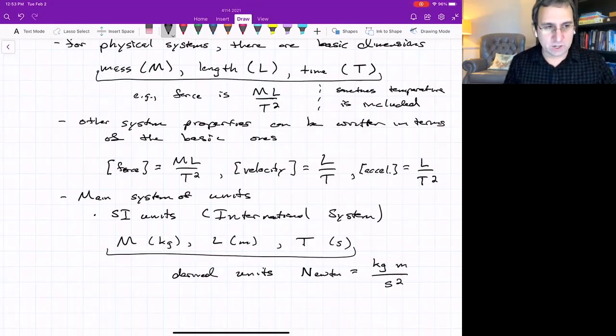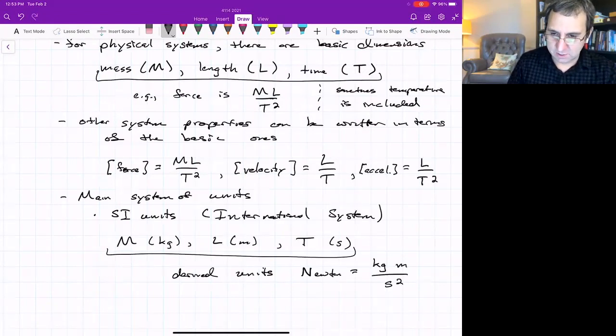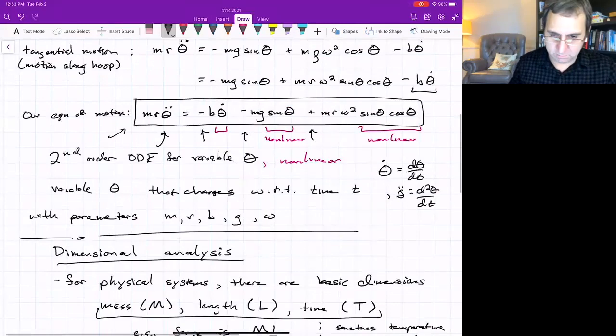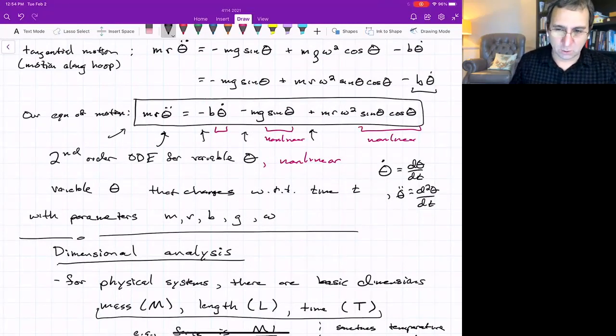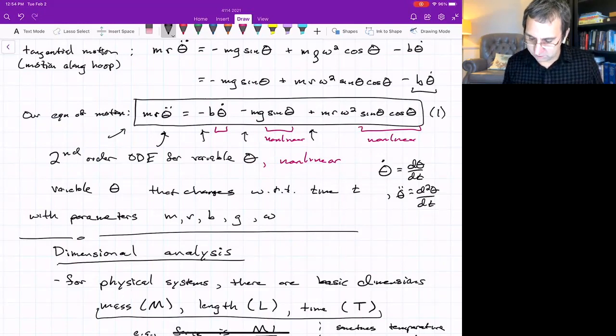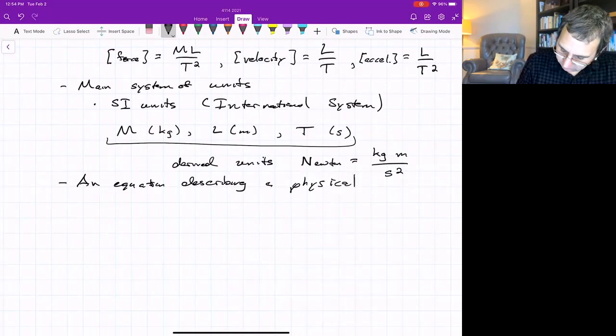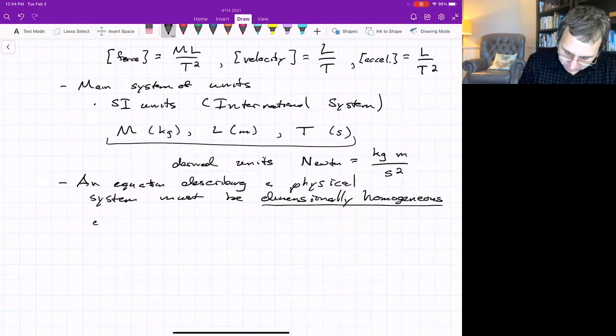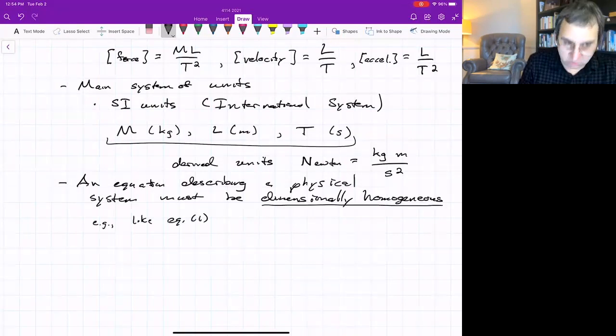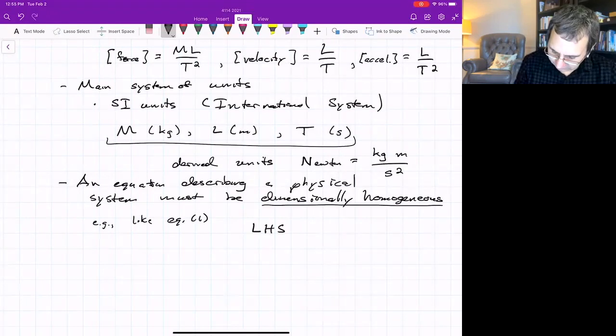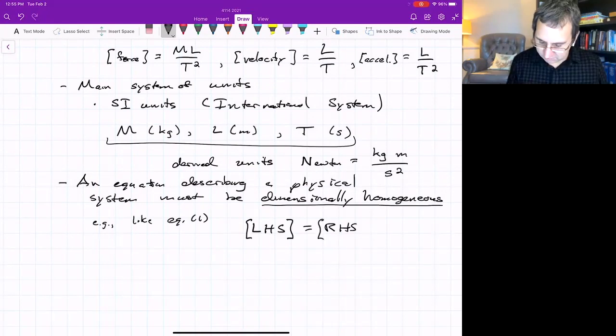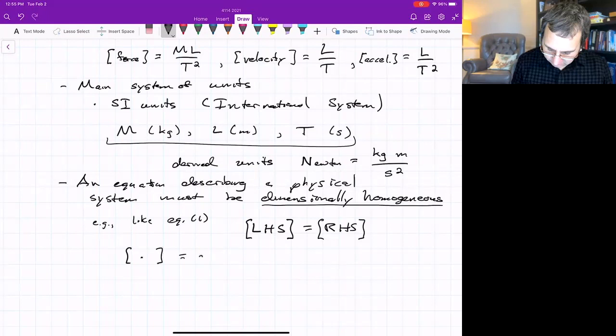An equation like the equation that we have up above, this equation of motion, needs to be dimensionally homogeneous, meaning all of the terms must have the same dimension. So an equation describing the physical system must be dimensionally homogeneous. For example, equation one up there, the equation of motion for the bead in the hoop. If you take the units of the left-hand side, that must equal the units of the right-hand side. This denotes the dimensions.